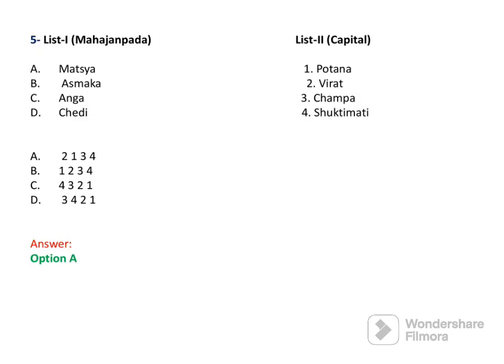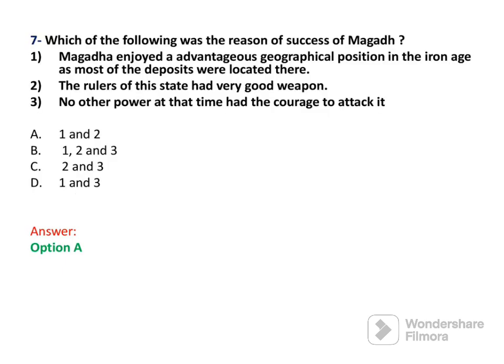The next question gives a matching list: List 1 has Maha Janpads and List 2 has their capitals. Kuru's capital was Virat, Asmaka's capital was Botana, Ang's capital was Champa, and Chedi's capital was Suptimati.